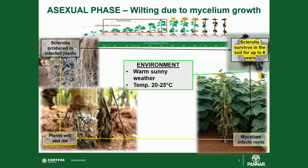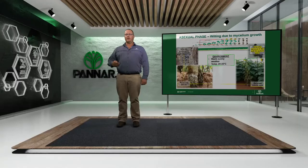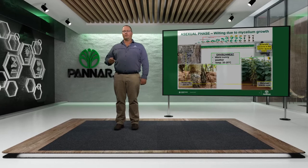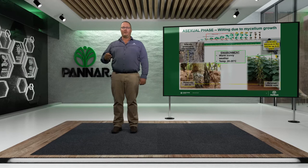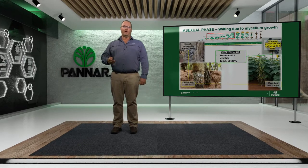Sclerotinia infection in sunflower can occur in two ways. Firstly, the asexual phase, where mycelium infects the root system. Developing roots from a host plant growing near sclerotia will stimulate the sclerotia to germinate, sending out mycelium that infects the root and grows up into the stem, causing a canker-type growth at the stem base. Mycelia on the roots can also infect neighbouring healthy plants whose roots cross those of a diseased plant.